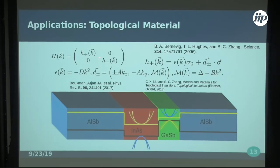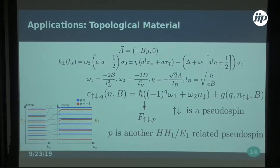Egg spoke about the BHZ model earlier. We use parameters from that group. The bands Egg spoke about are the S-symmetry one and the P-symmetry ones. When you do the Hamiltonian, you get the same kind of structure, but since you now have a 4D Hamiltonian accounting for multiple bands, you get an additional quantum number that accounts for bands. In your F-function, when you invert it, you must account for this extra degree of freedom — giving a new pseudo-spin quantity.